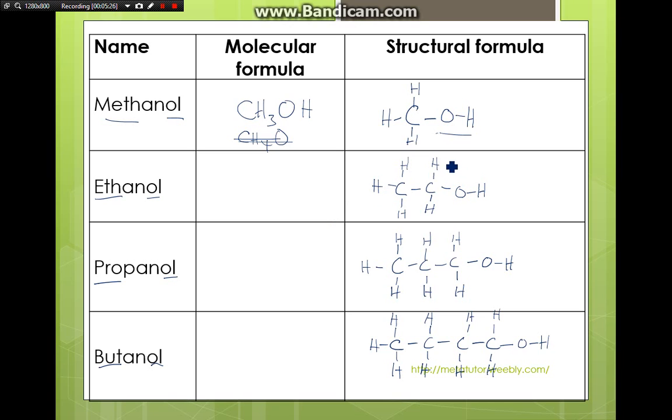Ethanol - we write the one on the left first: C2, total of five hydrogen, H5, and then we bring in the hydroxyl group. Propanol - three carbons, seven hydrogens, and then we bring in the hydroxyl group. Butanol - C4H9 and the hydroxyl group.